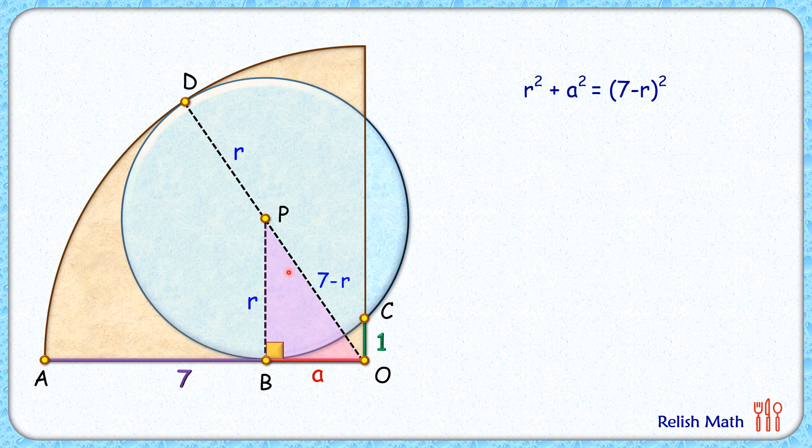First, let's remove this construction. For our second equation, let's join PC. PC is the radius of the blue circle, thus r centimeters. From point C, let's drop a perpendicular on PB.